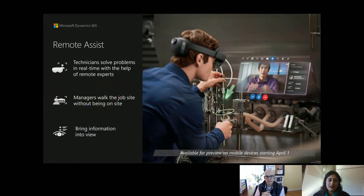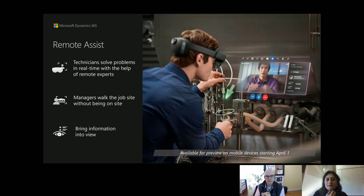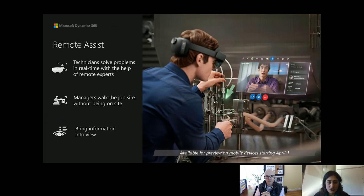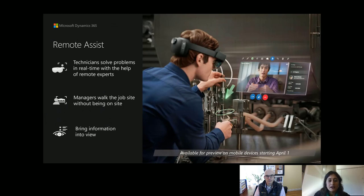Remote Assist helps you see what I see to help solve a problem. It's an expert looking through your eyes to see exactly what you're looking at and then providing annotations, circles, arrows, and documentation so you can solve the problem. It's built on Microsoft Teams — think about Teams in your field of view. Managers can walk the job site without being on site, saving travel costs. PDFs and images can be brought into your field of view so you can see manuals while working. Remote Assist Mobile will be available for preview on April 1st — keep an eye out.